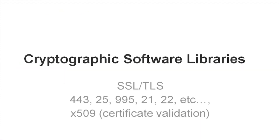Now we're going to discuss cryptographic software libraries. SSL — Secure Socket Layer — and TLS — Transport Layer Security. The ports involved are 443, 25, 995, 2122, etc. We're also going to discuss components of X.509 certificate validation, which you'll see quite a few test questions around. SSL is now defunct. TLS is the only thing left, and there are several versions we'll discuss along with problems and attacks possible within them.